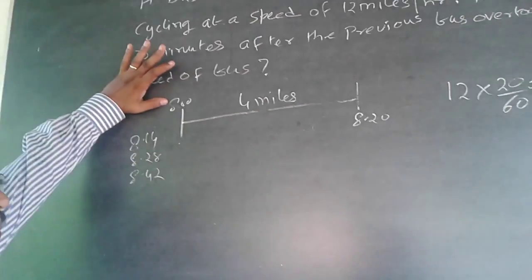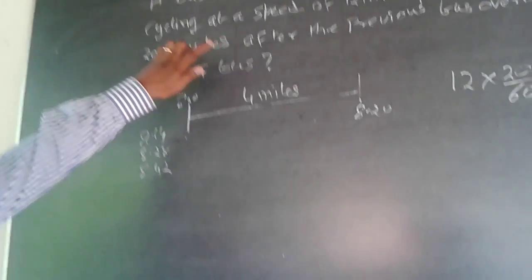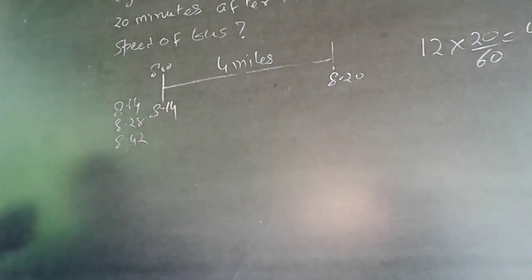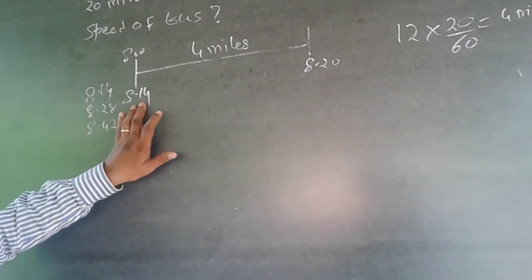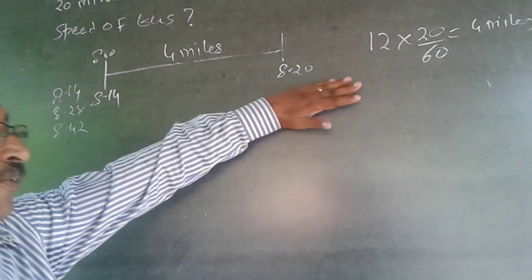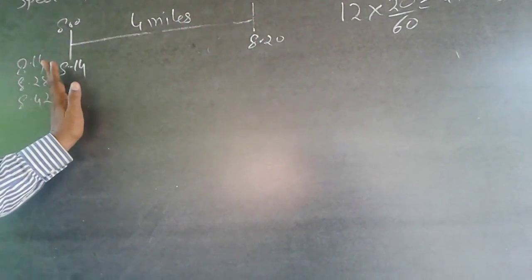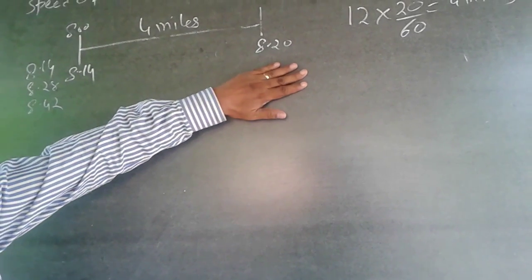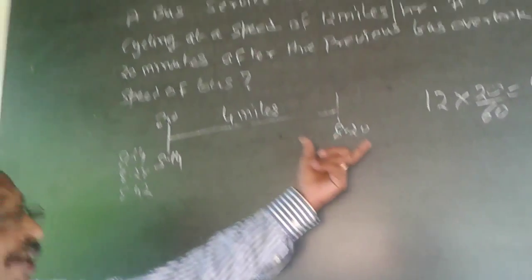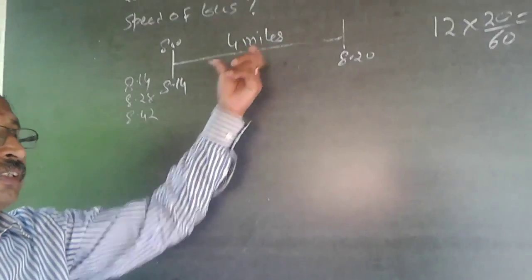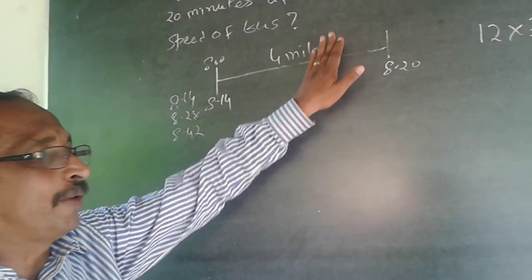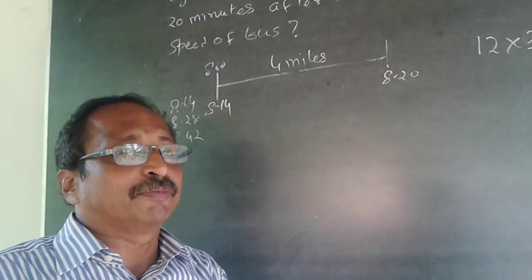Because one bus was here at 8 o'clock and the interval is only 14 minutes, the next bus will be here exactly at 8:14. The bus which is at the starting point at 8:14 is reaching the friends' position at 8:20. So the second bus is taking 6 minutes to cover this 4 miles.